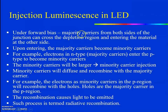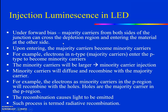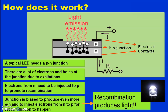In the forward bias mode, the majority carriers on both sides of the junction cross the depletion region and meet in the middle. More electrons and holes recombine, and energy is released in the form of photons. We have to choose the voltage such that more recombinations take place. Not all transitions or recombinations lead to light — some transitions are non-radiative, meaning energy is released as heat. We must choose the proper voltage and proper materials so that more radiative recombinations occur.